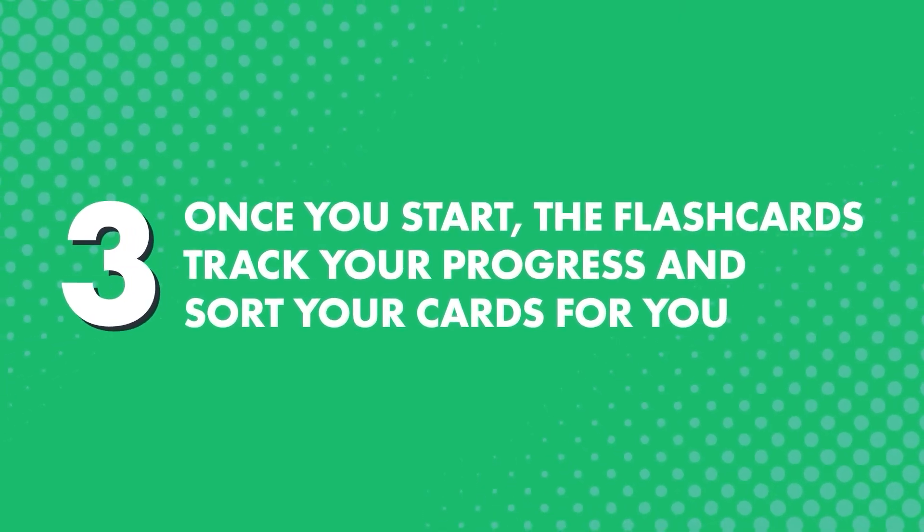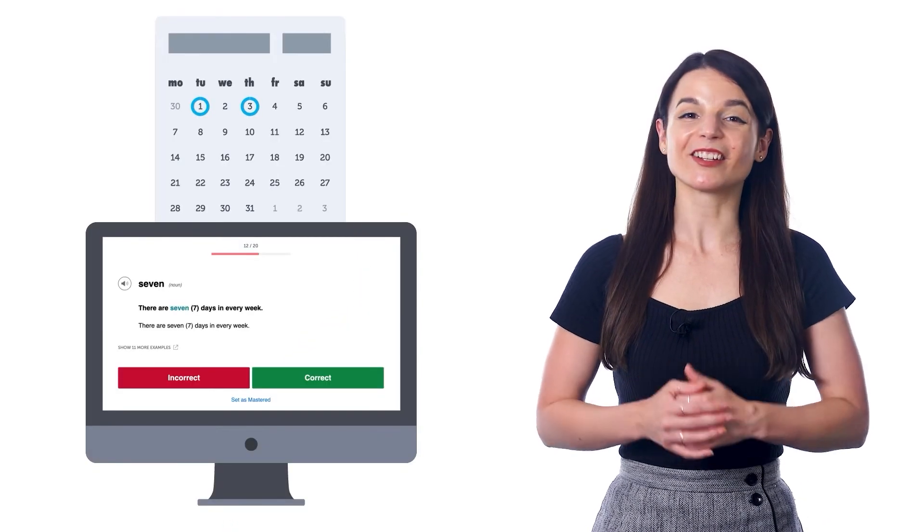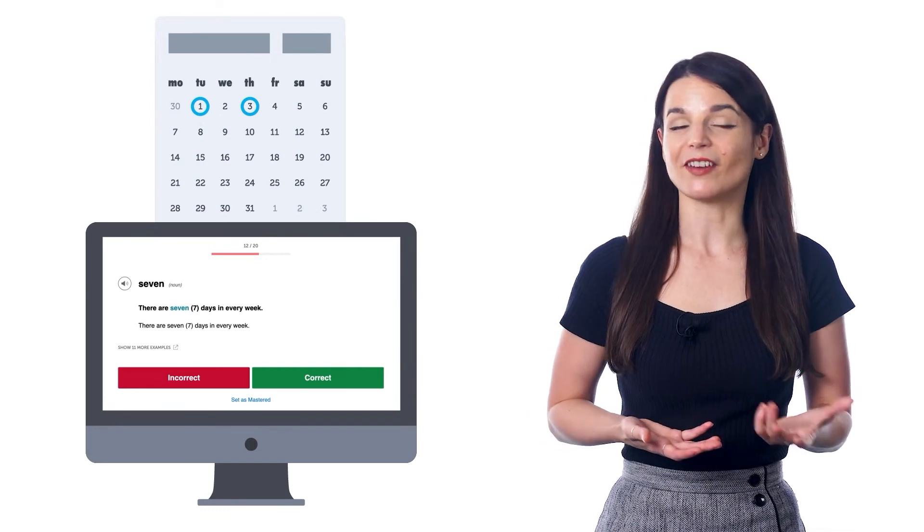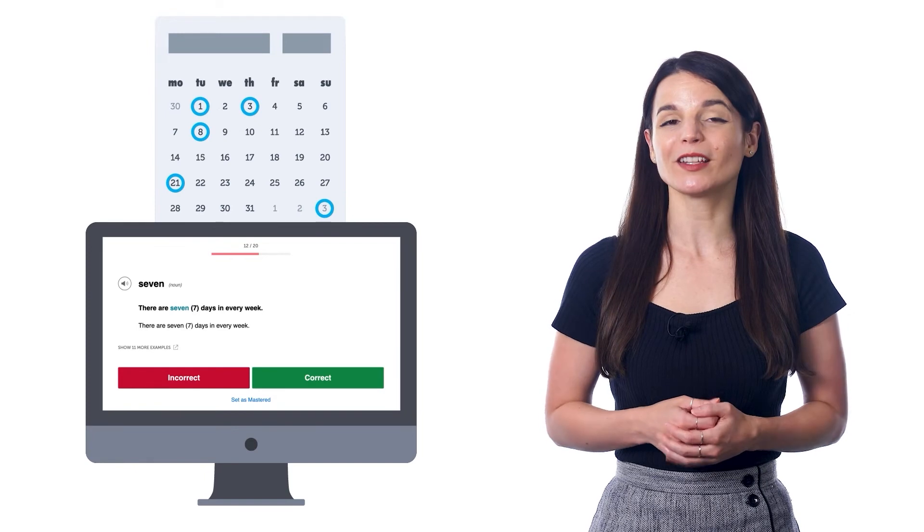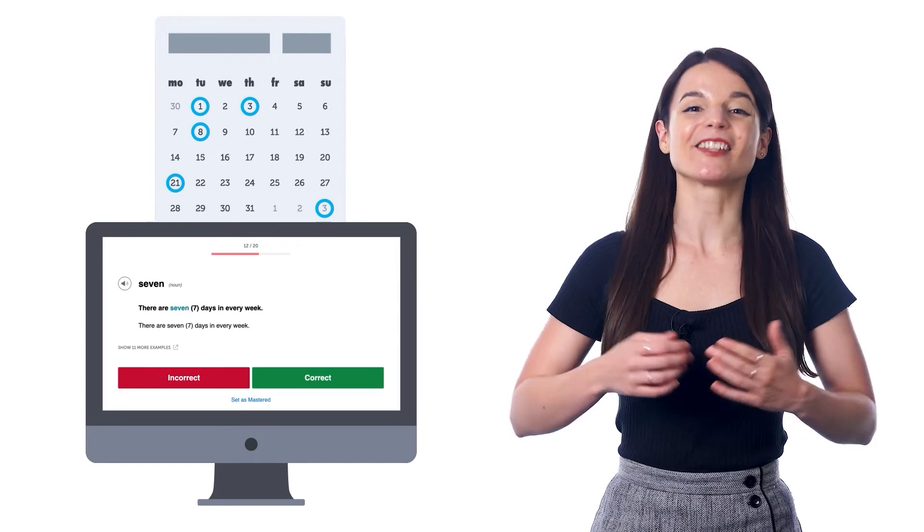Third, once you start, the flashcards track your progress and sort your cards for you. So, the tough words that you struggle with, you'll see them more often in a study session. And the easy words that you get right, they'll start getting spaced out. You'll see them again in 2 days, then 5 days, then 13 days, and so on. At which point, these words will start going into your long-term memory, and you'll never forget them. Once you're done with a study session, that's it for the day. And all of this takes just a few minutes. Then, your flashcards will remind you when to study again, and start introducing new words while spacing out the ones you already know. And that way, you can easily master hundreds of words a month, just by quickly reviewing words for a few minutes a day, without the hard work of memorization.